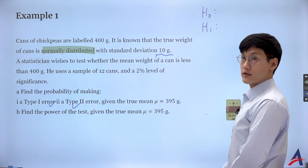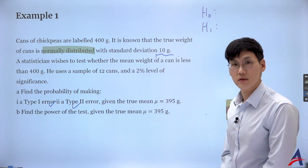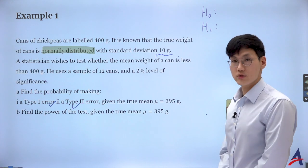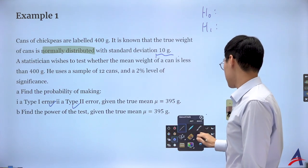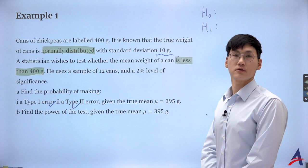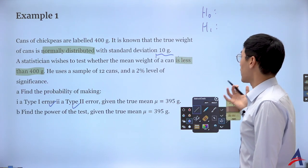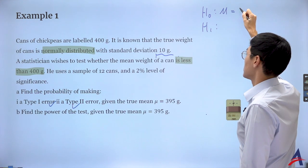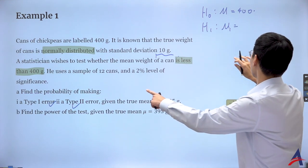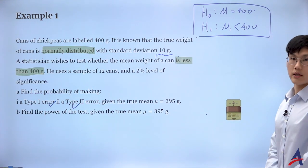For the null and alternative hypothesis: the alternative is either one-tail or two-tail. One-tail is less than or greater than; two-tail if it's 'not equal to.' In this problem I see something about 'decreased' or 'less,' so it's going to be a one-tail left-tail test. My null hypothesis is mu = 400 and the alternative is mu < 400.